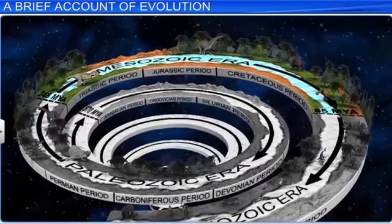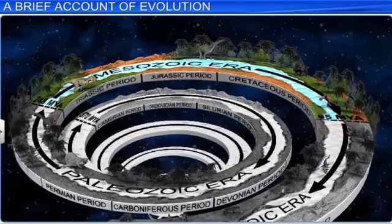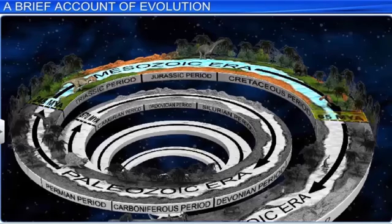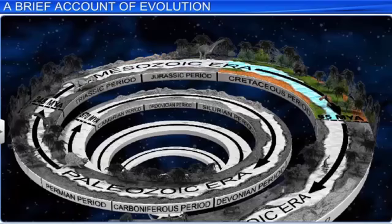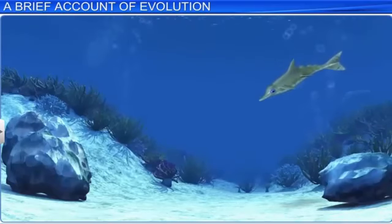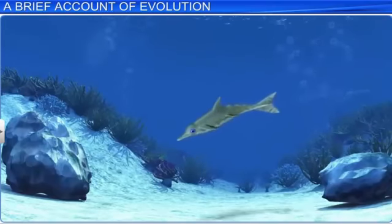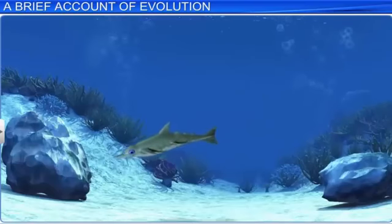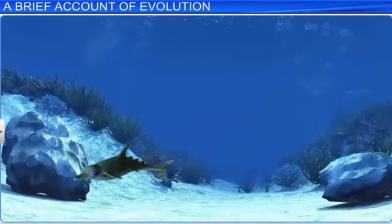Let us now take a look at the Mesozoic era, which extends from 245 or 248 million years ago to 65 million years ago. This era includes the Triassic, Jurassic, and Cretaceous periods. In the Mesozoic era, around 200 million years ago, some land reptiles went into the water and evolved as fish-like reptiles. For example, Ichthyosaurus.